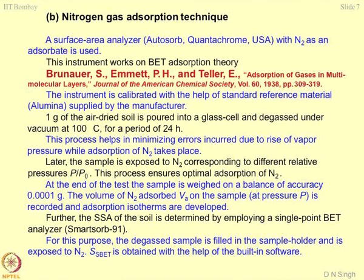At least one condition is fixed — temperature or pressure remains the same. The specific surface area of the soil is determined by employing a single-point BET analyzer known as Smart Sorb. The degassed sample is filled in the sample holder and exposed to nitrogen. You get surface area from the single-point BET with the help of built-in software. It is a very expensive instrument — a BET would cost around 50–60 lakhs, and a single-point BET not less than 7–8 lakhs.